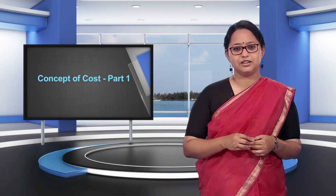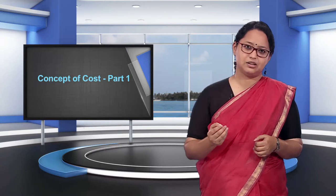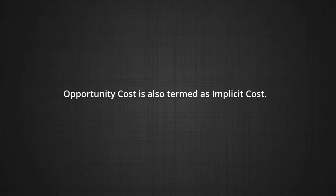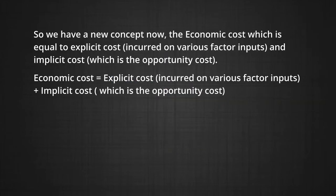But economists find this calculation incomplete. They recognize that there is an opportunity cost that is missing. Opportunity cost can also be termed as implicit cost. The mill owner who was earning ten thousand rupees before as a farmer is now missing out on that farm income. Therefore when economists calculate the profits for the mill owner, they will also take the extra ten thousand rupees of that lost opportunity or implicit cost into account.